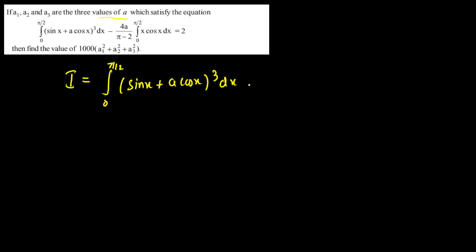Hello everyone. Today's question is: if a1, a2, a3 are the three values of 'a' satisfying the following equation, find the value of 1000 times (a1² + a2² + a3²). The equation is the integral from 0 to π/2 of (sin x + a·cos x)³ dx, minus (4a/π) minus 2 times the integral from 0 to π/2 of x·cos x dx, and this is given equal to 2.